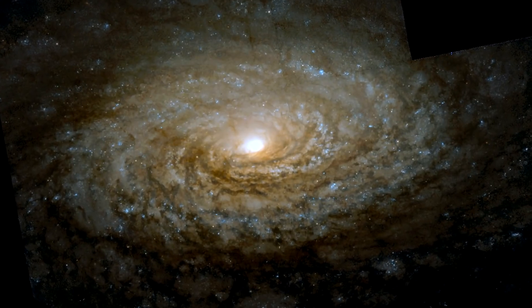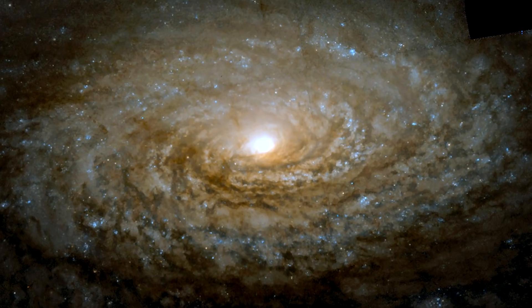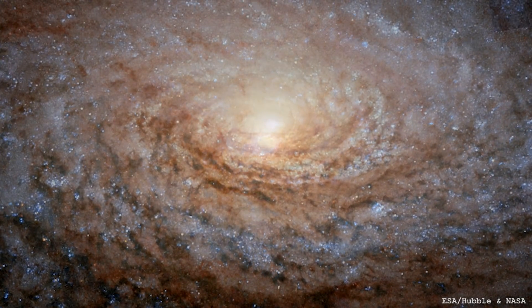It's Messier 63, otherwise known as the Sunflower Galaxy. It is a glorious-looking thing. It's a spiral galaxy, about 40, 50 million light-years away.